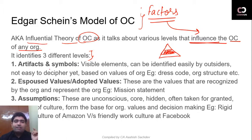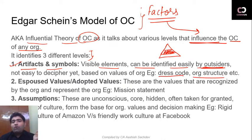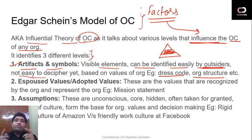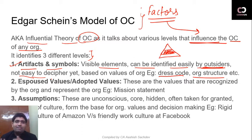The first level is Artifacts and Symbols. These are the visible elements that can be identified easily by outsiders — your dress code, organizational structure, hierarchy — all these things are visible. But they are not easy to decipher; you cannot easily understand how these are related to the core values of the organization. To understand this, let's take a basic example.